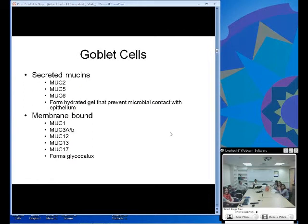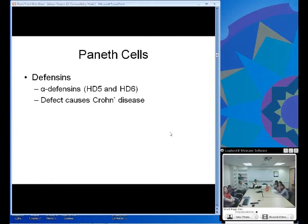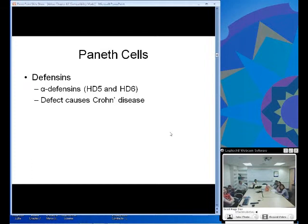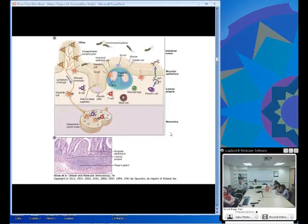The secreted mucins are MUC2, 5, and 6, and membrane-bound are 1, 3, 12, 13, and 17. Paneth cells secrete antibiotics that we produce, such as defensins - in particular alpha-defensins HD5 and HD6. A defect in defensins is one cause of Crohn's disease, so it's something that is important.